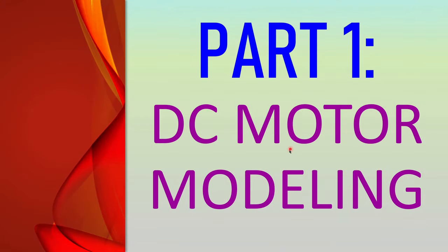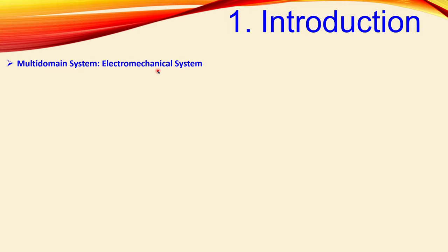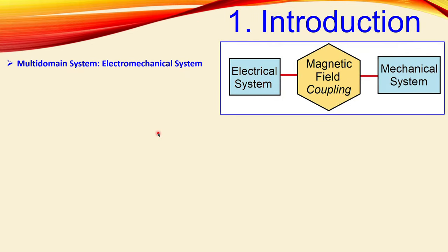Let's go to Part 1 about the introduction. The multi-domain system is an electromechanical system. When talking about a motor — in this case specifically a DC motor — we have an interaction between an electrical system and a mechanical system, coupled using a magnetic field. We have two different systems, two different domains, and they are coupled by a magnetic field.